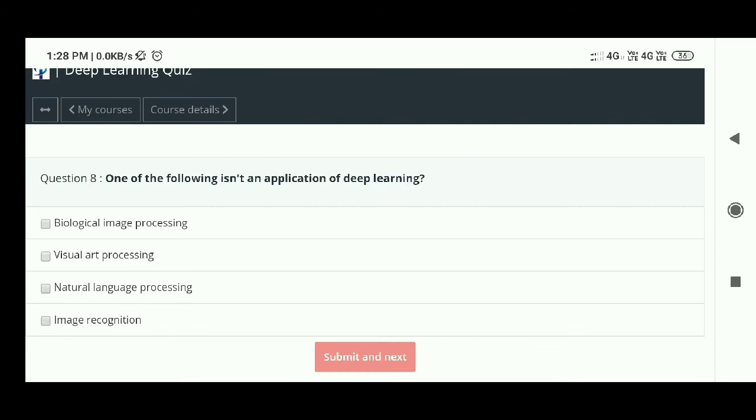Eighth question: One of the following is an application of deep learning. The answer is - biological image processing. Ninth question: When did Igor Aizenberg introduce CDP? The answer is - 2000.